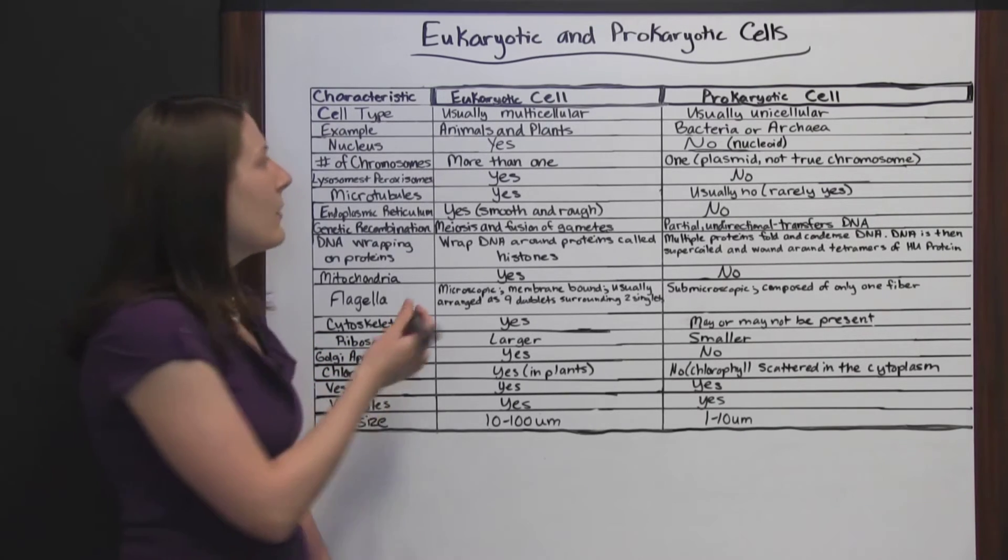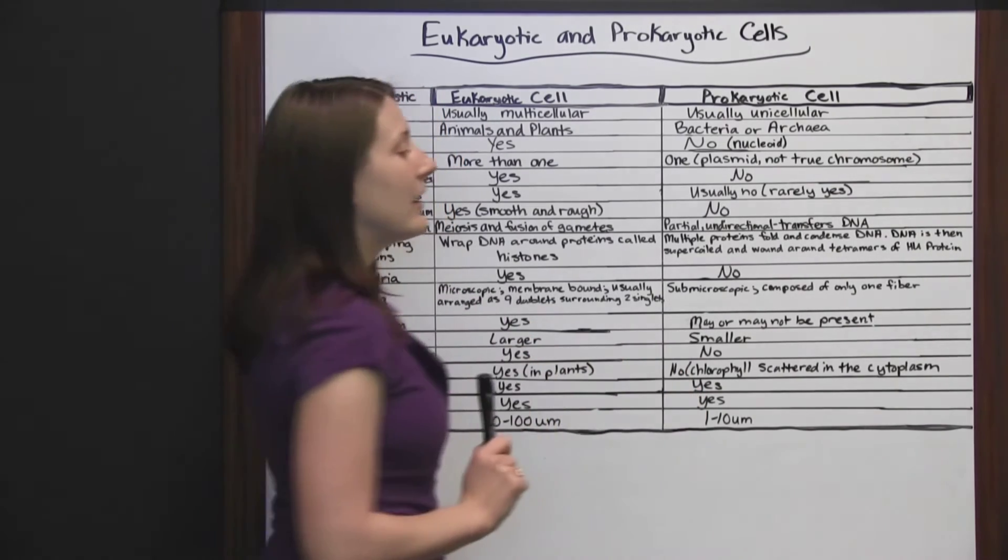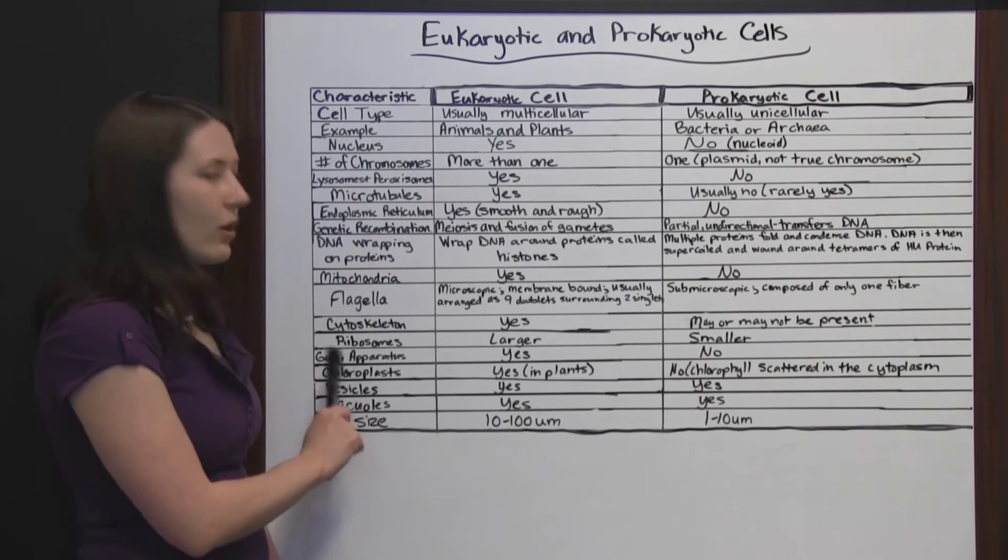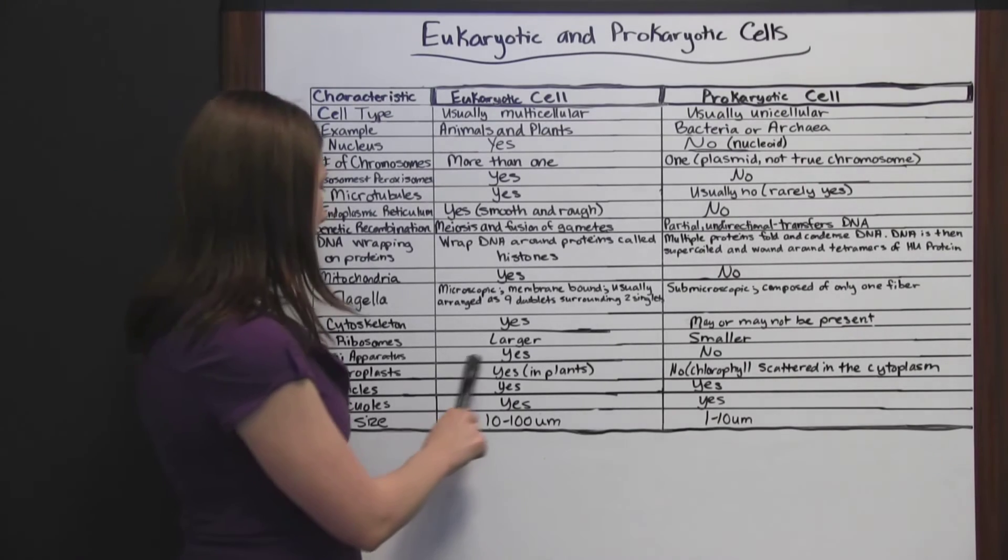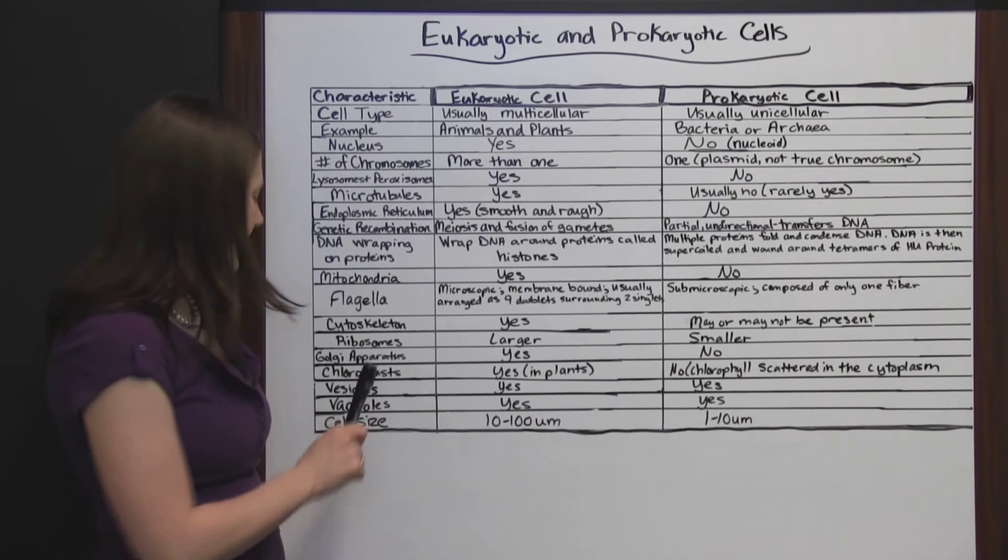Ribosomes are going to be present in both. They're going to be larger in the eukaryotic cells and smaller in the prokaryotic cells. The Golgi apparatus will be present in the eukaryotic cell and absent in the prokaryotic cell.